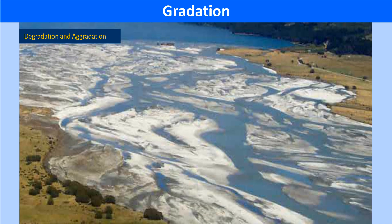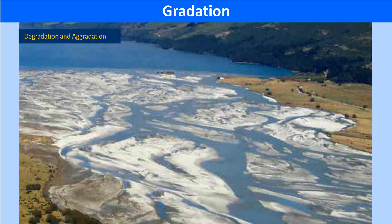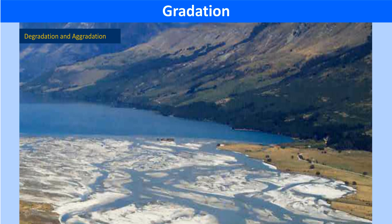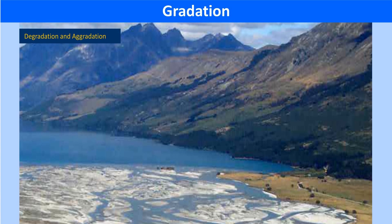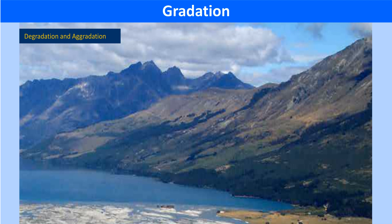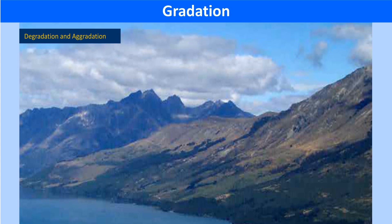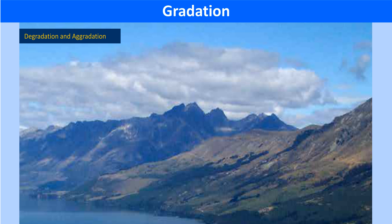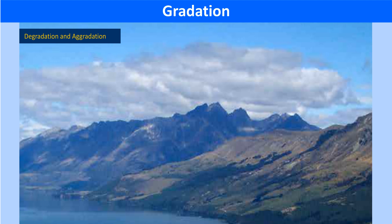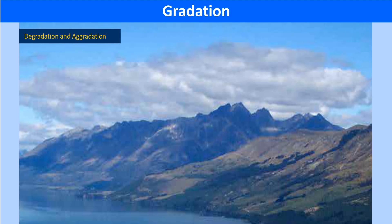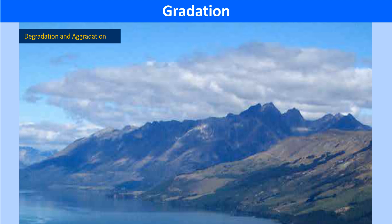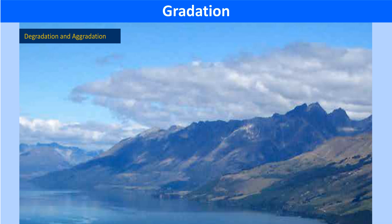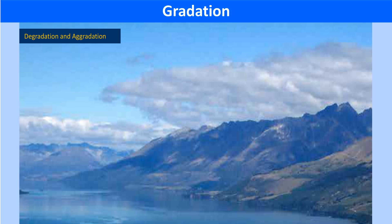There are two processes involved in the geographical phenomenon of gradation, called aggradation and degradation. Aggradation is the process that involves the formation of various land surfaces through deposition and accumulation of rock fragments, sand, alluvium, etc. Degradation is the process which involves the lowering of the earth's surface by disintegration and carrying away of rock fragments. These two processes usually take place simultaneously, causing lowering of the land at certain places and building up of landforms at others.